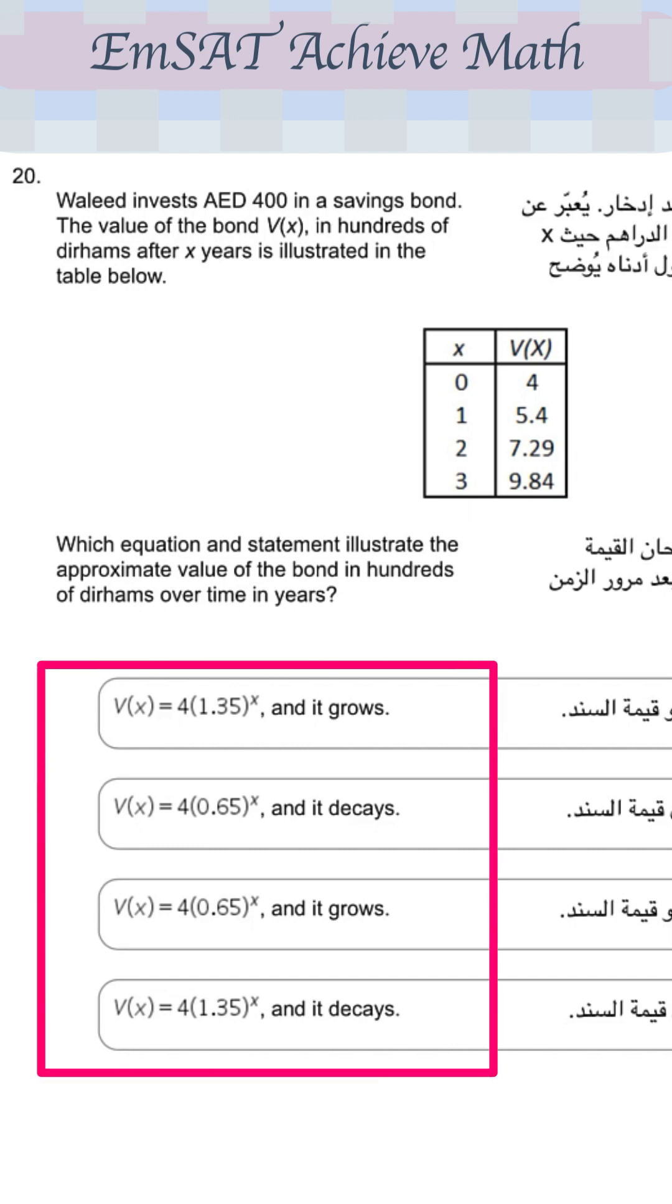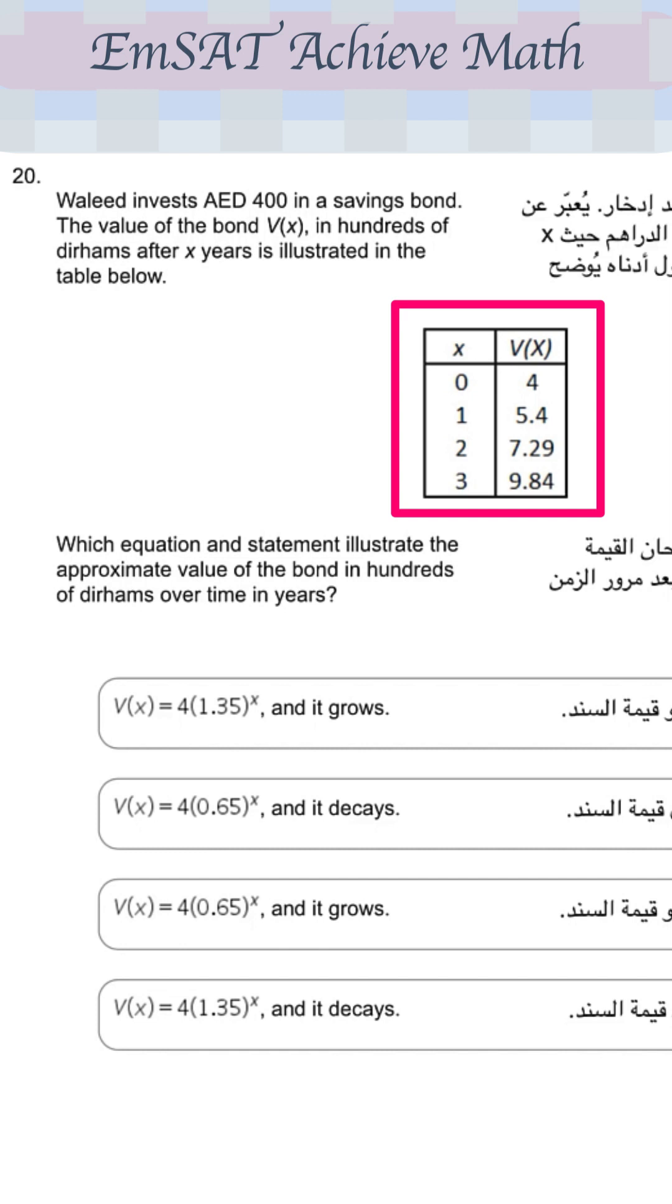Here we have exponential functions. If we look at the numbers in the table 0, 1, 2, 3, it gives 0, 4, 1, 5.4, to 7.1, you see that it's increasing, which means that it's a growth.